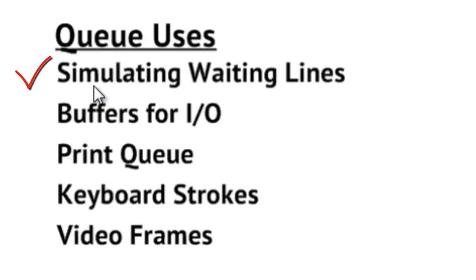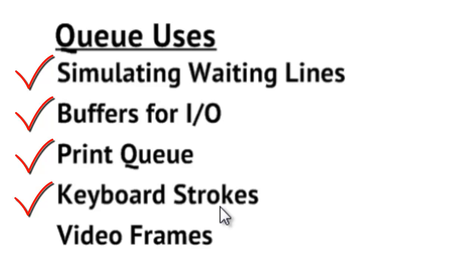In terms of uses for the queue, we can simulate waiting lines as we've seen. You'll also find queue data structures within computer systems for buffering input and output operations. Think about a print queue — if you have a network printer with multiple computers, you may have lots of job submissions to be printed on a first-come, first-served, or first-in, first-out basis. Those jobs would be queued up inside a memory buffer within the printer. The same idea applies to keyboard strokes: as we type, there's a buffer tracking the keys pressed in order, so characters appear on screen in the same order we typed them — a FIFO buffer. The same concept applies to video frames as well.